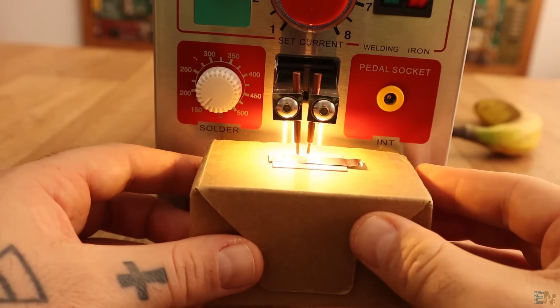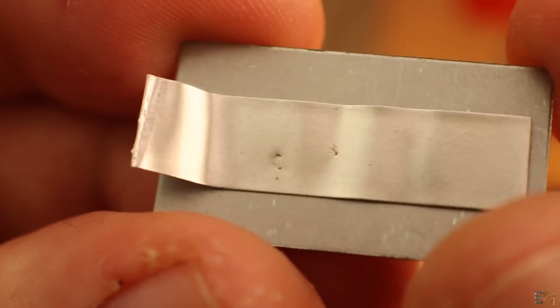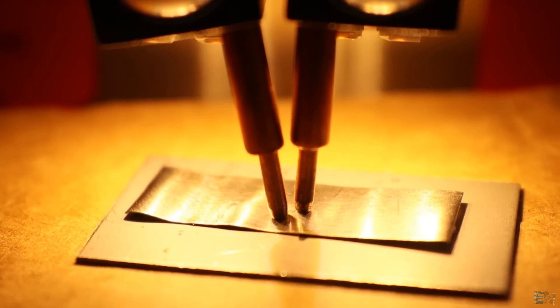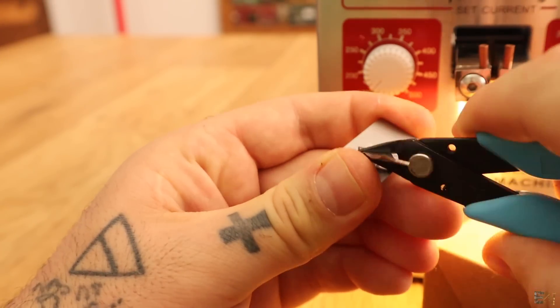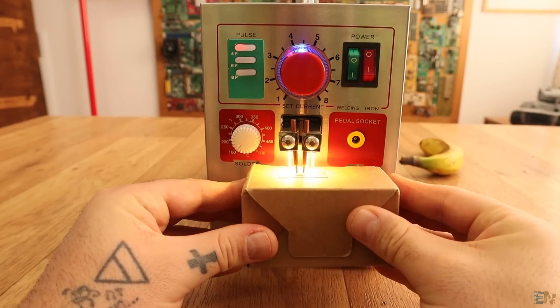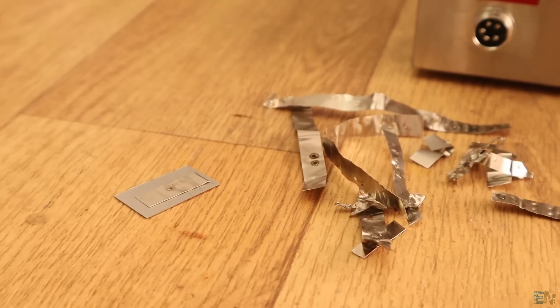So I increase the power a bit and now the spark is bigger and the sheets are soldered together. I also select 4 pulses with the same power and now the parts are really soldered together. So you should try different variations of these metal sheets, different values of power and different amount of pulses and write down which one works better on each case.